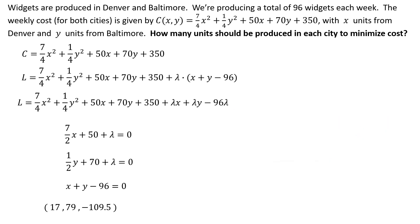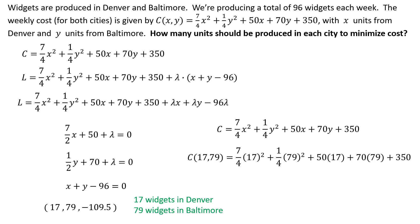And now that I know the critical point, i.e., the solution to this partial derivative equation, I know that since x was the number of widgets produced in Denver, and y was the number of widgets produced in Baltimore, I know what I have to do to minimize my cost. I could plug in a nearby point and verify that it's a minimum, but I won't do that here. I will, however, take the cost equation, plug in 17 and 79, to find out that my minimum cost in producing 96 total widgets is $8,796 per week.